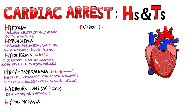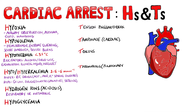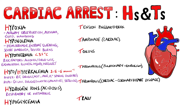Now for the T's. These include tension pneumothorax, cardiac tamponade, toxins, pulmonary thrombosis — i.e. a pulmonary embolism — and cardiac thrombosis, i.e. coronary heart disease. These are the main ones, but some sources also include trauma.